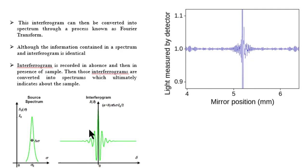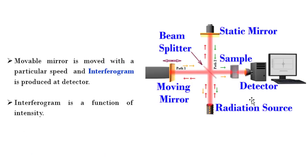The interferogram looks like this, and when the Fourier transform has been applied, we normally get a spectrum which makes it easy to identify which functional groups are present in the unknown sample. In order to study a sample, an interferogram is recorded first in the absence of the sample, and then in the presence of the sample. These interferograms are then converted into spectra, from which the wavelengths absorbed by the sample are detected, and ultimately the functional groups of the unknown sample are identified.